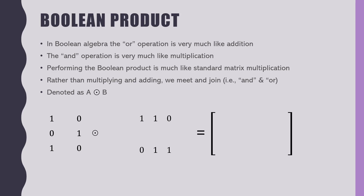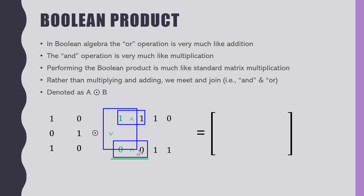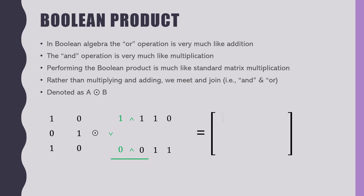It's very much like multiplication in a regular matrix. We take the first row and multiply it by the first column, except we're not multiplying — we're ANDing. We AND those together, and then we OR the results. I'm going to AND this and get 1, AND this and get 0, then OR 1 with 0, and that gives us the first entry. The answer is 1 — does everybody see why that's 1?